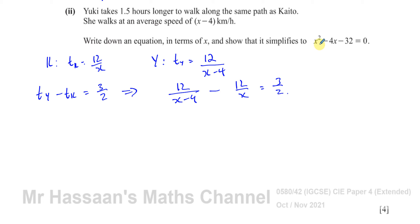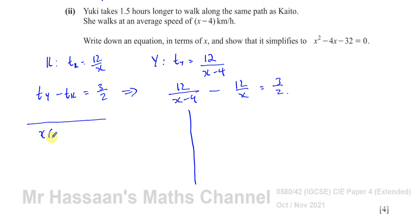Method 1: Make a common denominator of x(x − 4) on the left side. For the first fraction, multiply top and bottom by x to get 12x on top. For the second fraction, multiply top and bottom by (x − 4) to get 12(x − 4) on top. This equals 3/2. Now multiply both sides by x(x − 4) and by 2.